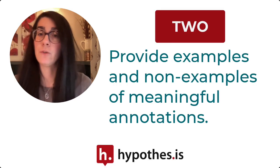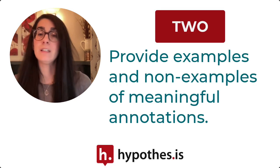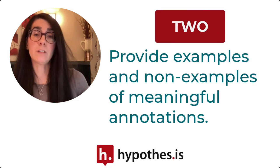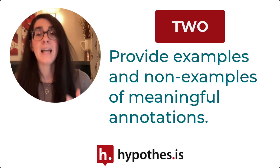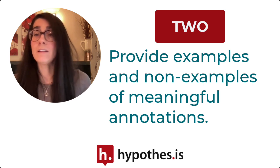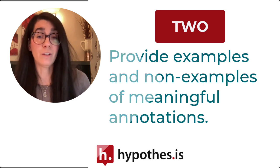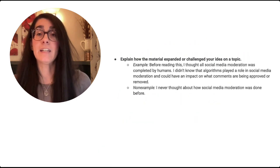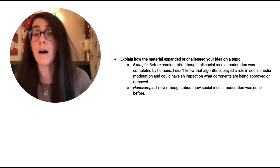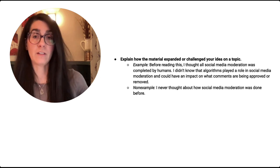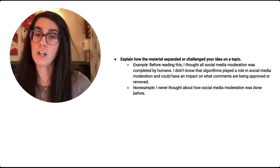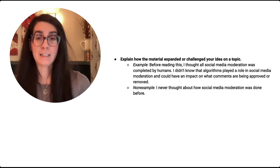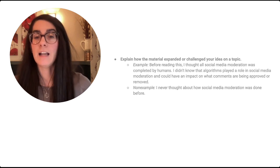The second tip is to give students examples and non-examples of what annotations should and should not look like. Sometimes students aren't quite sure what a good annotation actually looks like, and giving them those examples as a model can help them use those as a foundation for their own reflective annotation work.